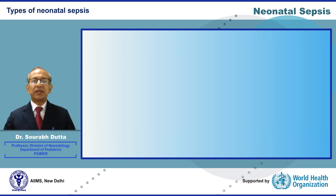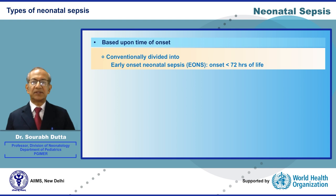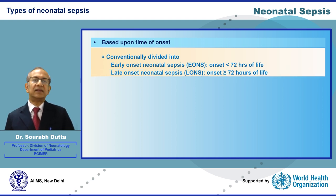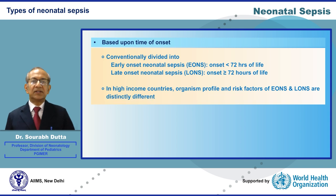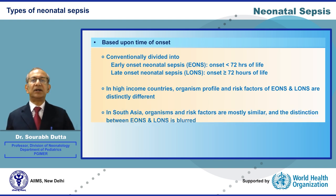Neonatal Sepsis may also be classified based upon the time of onset of clinical signs or based upon organ localization. Conventionally, neonatal Sepsis is divided into early onset Sepsis, which starts at less than 72 hours of life, and late onset Sepsis, which starts at or beyond 72 hours of life. In high income countries, early onset Sepsis and late onset Sepsis are distinct entities. Early onset Sepsis is primarily due to vertical transmission from the mother and is associated with maternal risk factors, whereas late onset Sepsis is not. In South Asia, however, the distinction between early and late onset Sepsis is blurred.